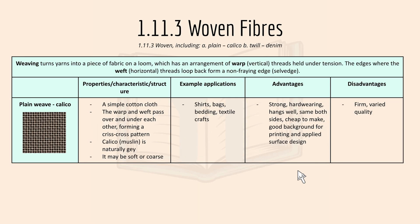Moving to 1.11.3 woven textiles: weaving turns yarns into a piece of fabric on a loom, which has an arrangement of warp (vertical threads held under tension). The edges where the weft or horizontal threads loop back form a non-fraying edge called a selvedge. Here we have a plain weave — calico — a simple cotton cloth where the warp and weft pass over and under each other forming a crisscross pattern.